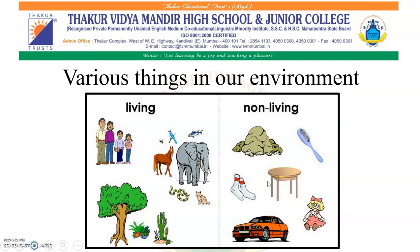There are many kinds of plants and animals around us. They show some similarities and some differences. Yet, with the help of certain features, we can tell that they are all living things. These features are not seen in non-living things. Such features are said to be the characteristics of living things.